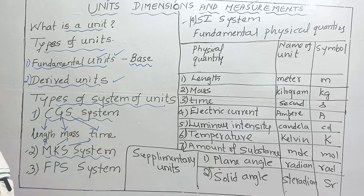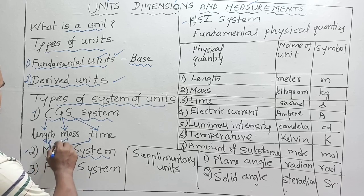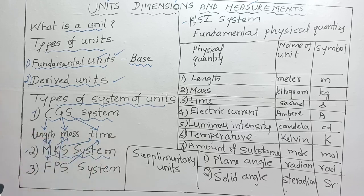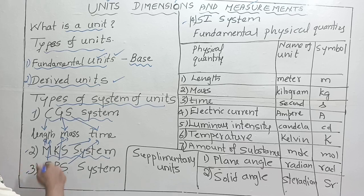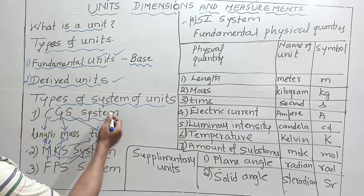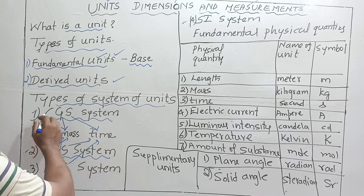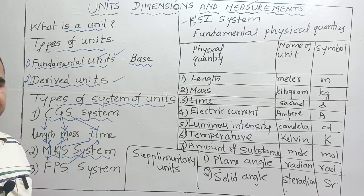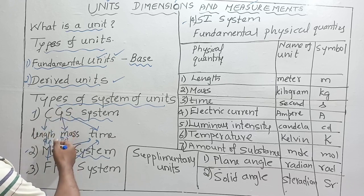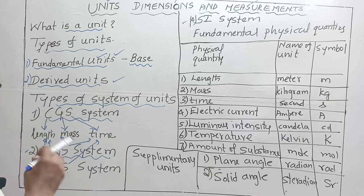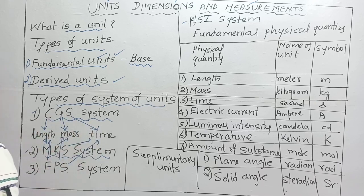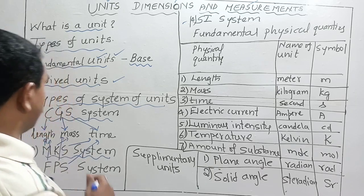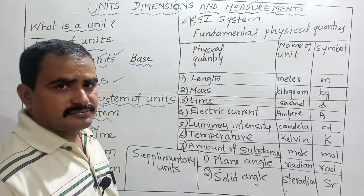The third system is the FPS system: F stands for foot (unit of length), P stands for pound (unit of mass), and S stands for second (unit of time). Comparing the systems: centimeter, meter, and foot are the length units; gram, kilogram, and pound are the mass units; and second is common to every system.